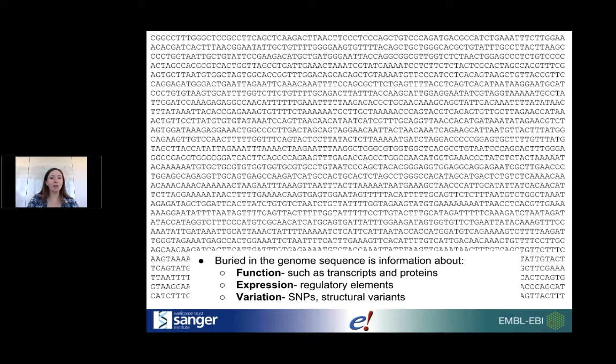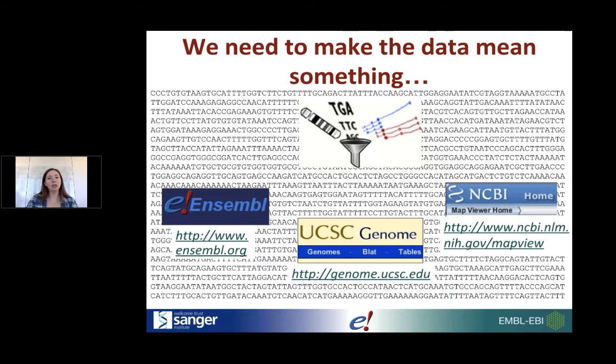That data looks quite meaningless to our eyes without context, but we know that buried inside the sequence there's a lot of information: transcripts, proteins, expression, regulatory elements that control transcript expression, and when sequencing multiple individuals, variants between those individuals. What genome browsers do is pull information from experiments from all over the world into one place and provide a way to visualize it. Ensembl is one of the three main genome browsers, alongside the UCSC Genome Browser and the NCBI Map Viewer.